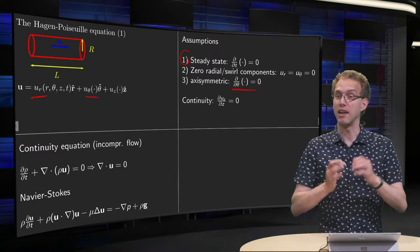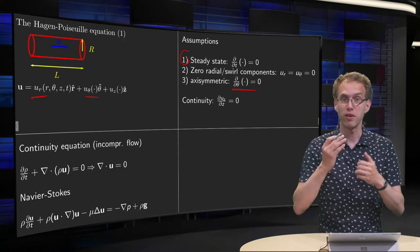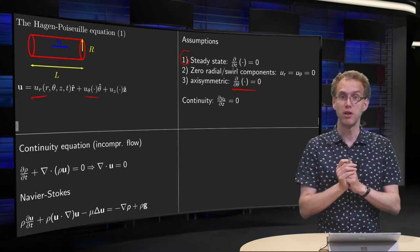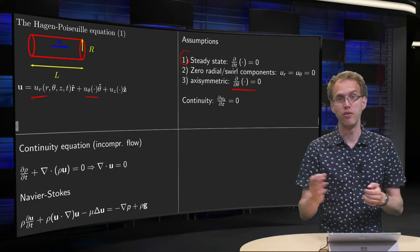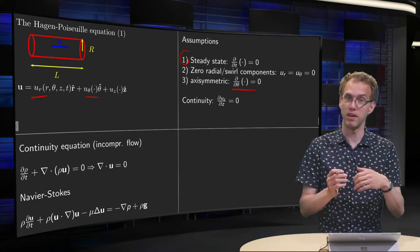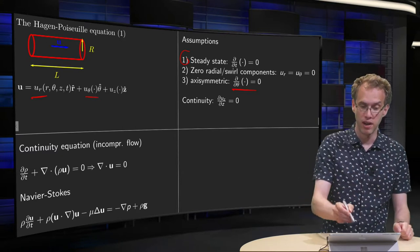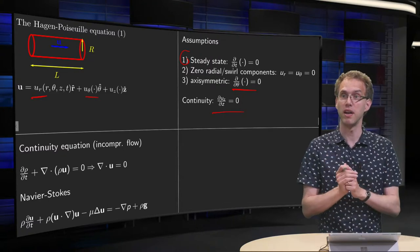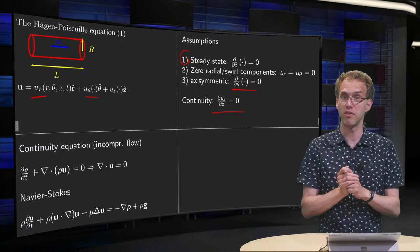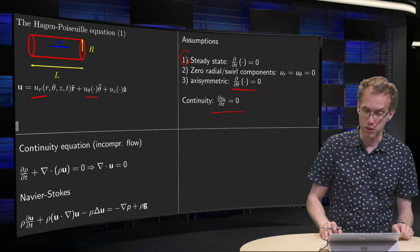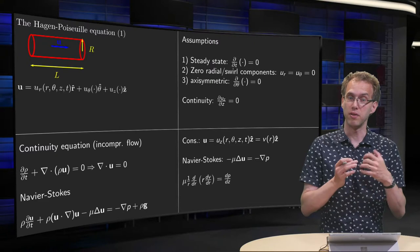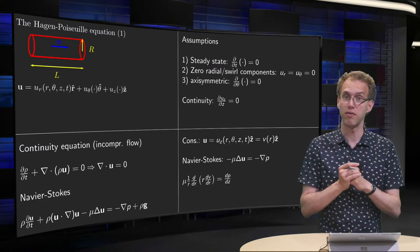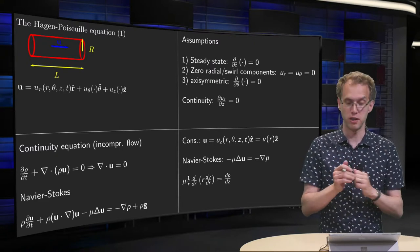Now, what do we get if we make those simplifications? First of all, we can plug them into the continuity equation. The u_r and u_theta are already zero, so what we are left with is that du_z/dz equals zero. That is the remainder of the continuity equation. So what happens then if we want to plug this into Navier-Stokes? Well, first let's summarize a bit.